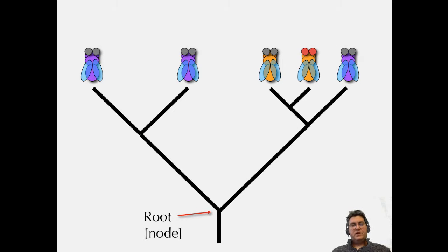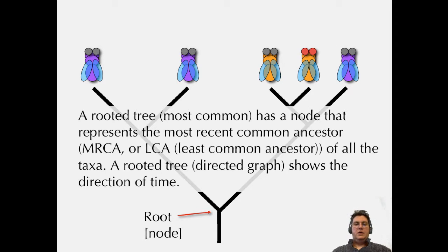The root is also a node. A rooted tree is the one you'll see most commonly, and it has a node that represents the most recent common ancestor, MRCA or LCA, least common ancestor, of all the taxa. A rooted tree, also known as a directed graph or digraph, shows the direction of time. Note that this root is often not actually an organism we sampled. We might have an outgroup, something related to everything else but definitely outside that group that helps us root it, but the root is actually just an internal node.